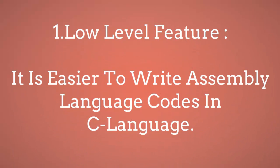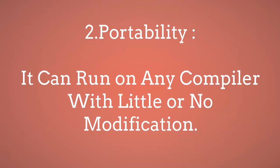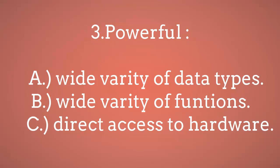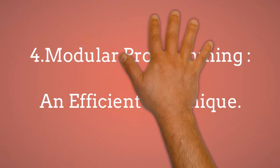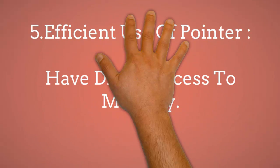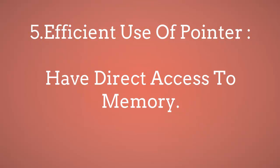C has low-level features, meaning assembly code can easily be written using C. Second, C is portable — it can run on any compiler with no or little modification. Third, it's powerful: it provides a wide range of data types and functions. A major advantage is that it can access hardware directly, and C supports modular programming, which simplifies larger modules into small, systematic structures.